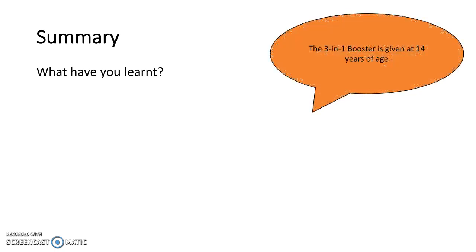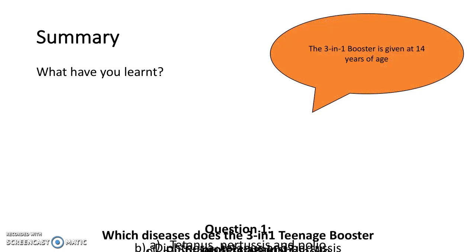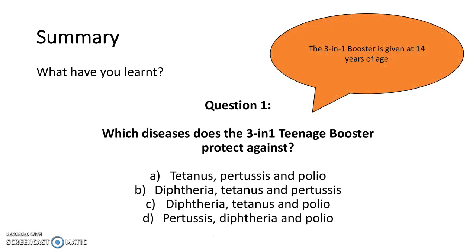There are three more questions to finish off. Question 1 is: which diseases does the 3-in-1 teenage booster protect against? This vaccine is given at 14 years of age. The answer is option C — the 3-in-1 teenage booster protects against diphtheria, tetanus and polio.